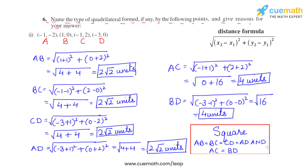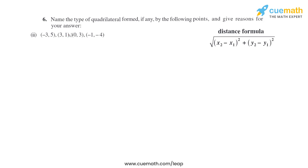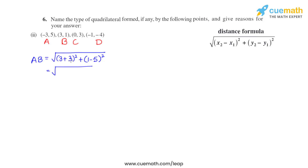Let's do the second part now. We label the points A, B, C, D and find the sides. For AB: (3 minus −3) whole square plus (1 minus 5) whole square = (6)² + (−4)² = 36 + 16 = 52. So AB = 2√13 units.